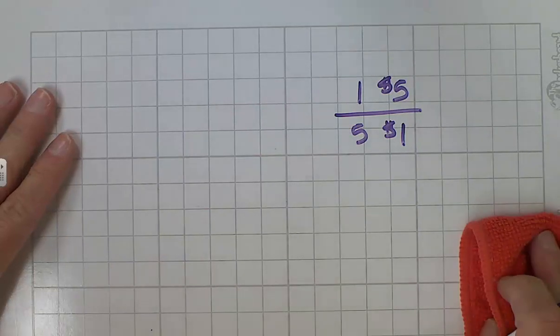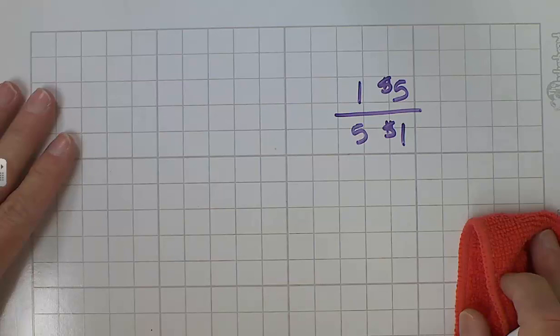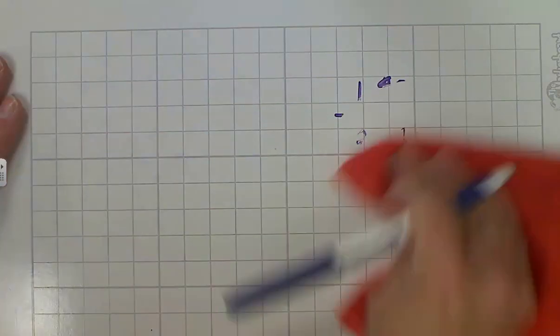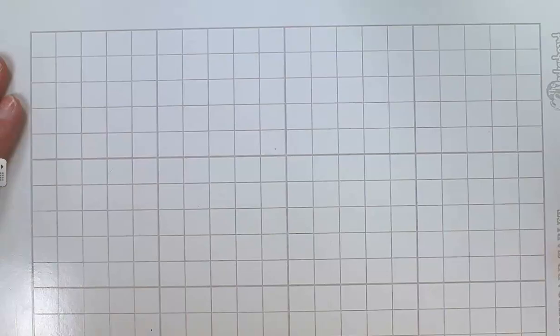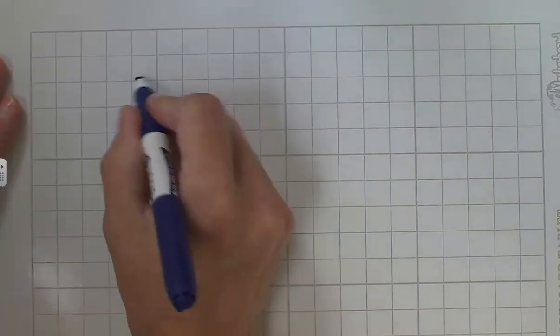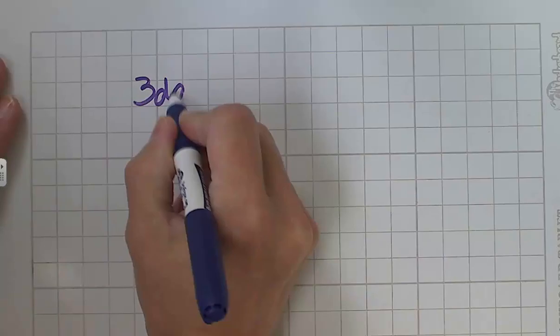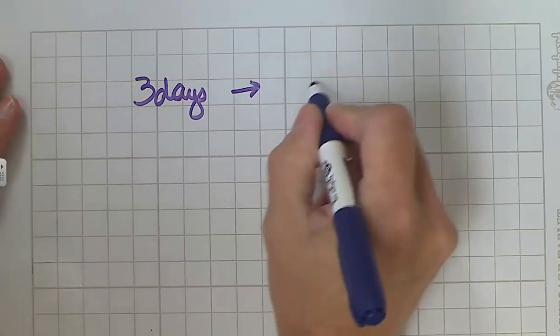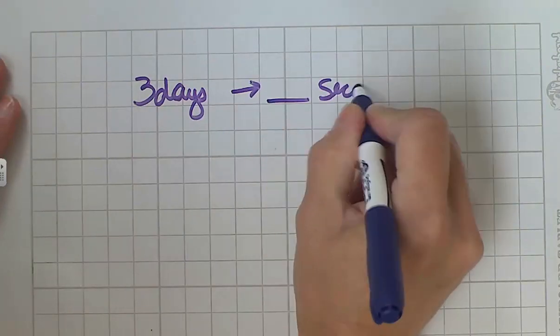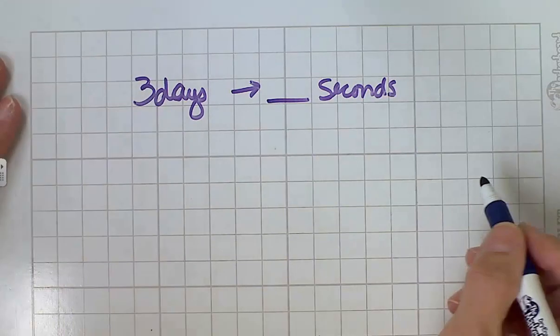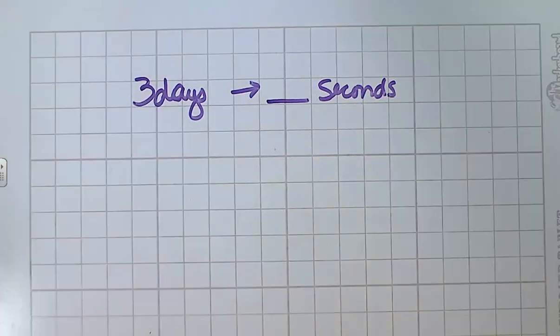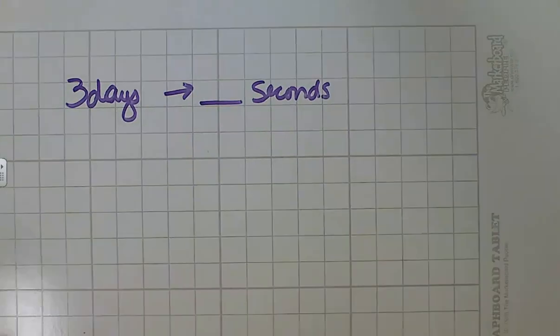It's using different names, multiplying things by something that's equivalent to one to change it from one unit to the other. So let's do an example. We're going to start with three days and I want to convert three days into seconds. Well, first I need to think of all the things that equal one that relate three days to the number of seconds.